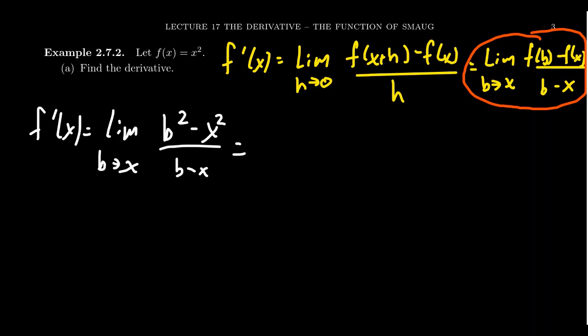Instead, what we need to do here is we're going to factor the numerator. The reason that we get 0 over 0 is because these two polynomials, b squared minus x squared and b minus x, have a common factor. The numerator is actually a difference of squares. We get b minus x, and we get b plus x on the top. Then there's a b minus x in the denominator.